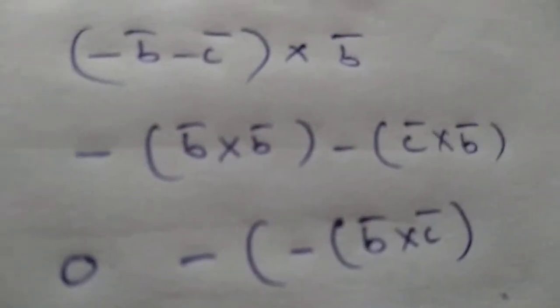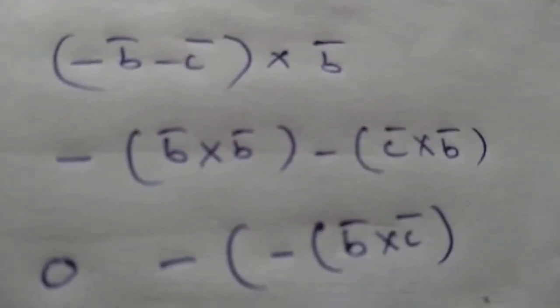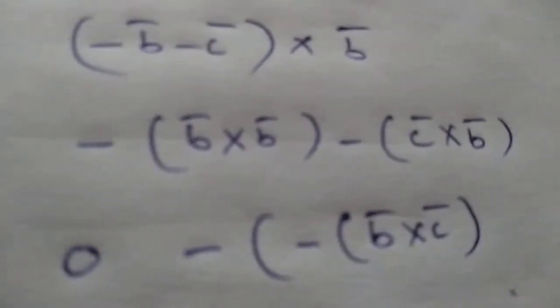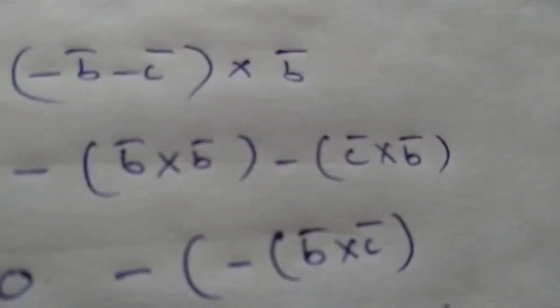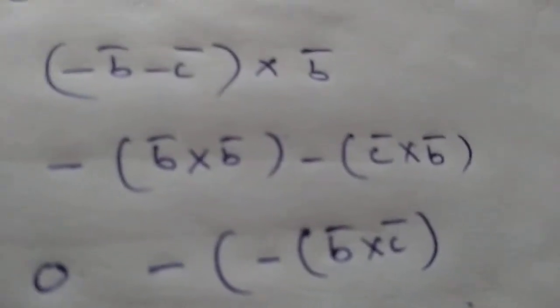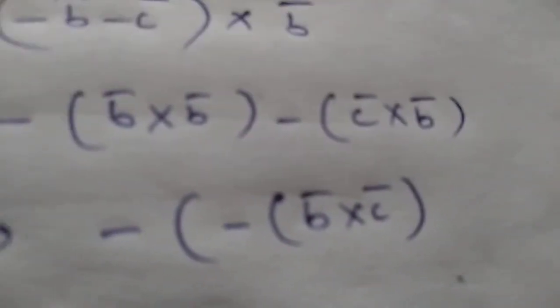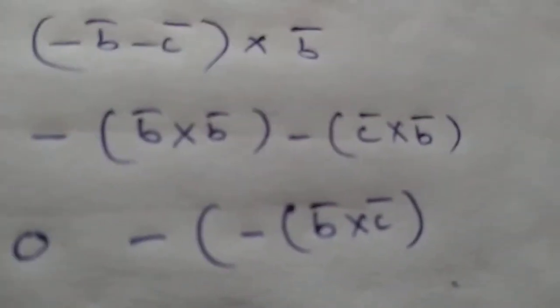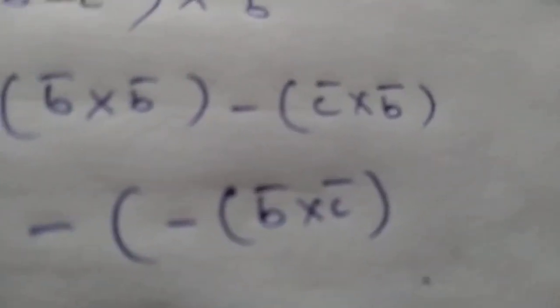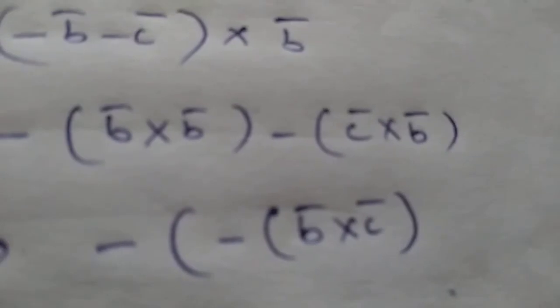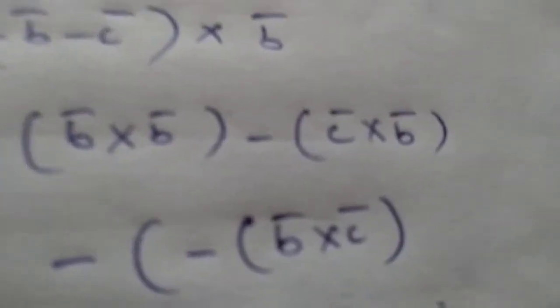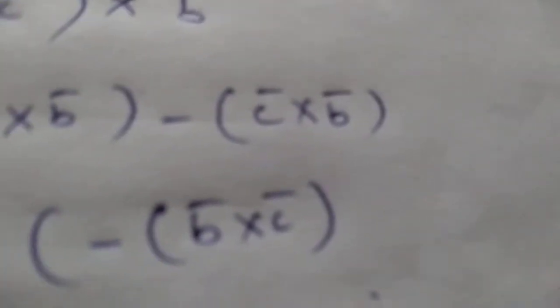Now, the cross product of two same vectors: b̄ × b̄ = 0̄. So, -b̄ × b̄ = 0, and -c̄ × b̄ remains. Changing the order: -c̄ × b̄ = b̄ × c̄. Therefore, ā × b̄ = b̄ × c̄. That is equation number 1.